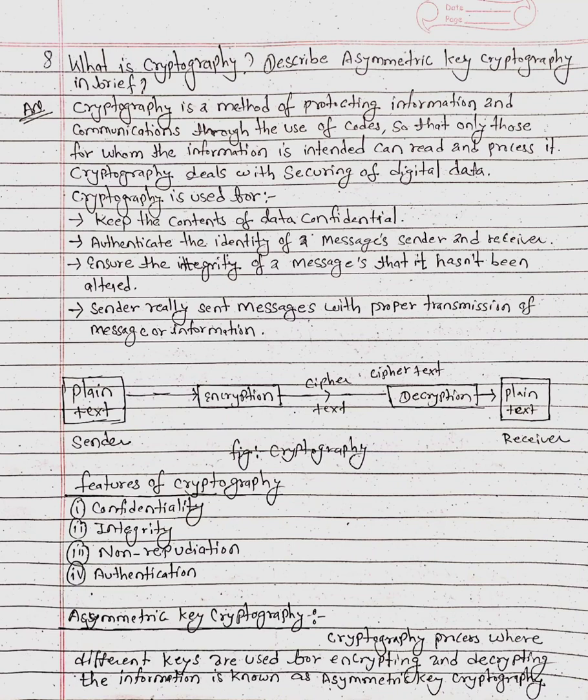The four features of cryptography are: confidentiality, integrity, non-repudiation, and authentication. These four features can be achieved by using cryptography. Asymmetric key cryptography is a cryptography process where different keys are used for encrypting and decrypting the information.